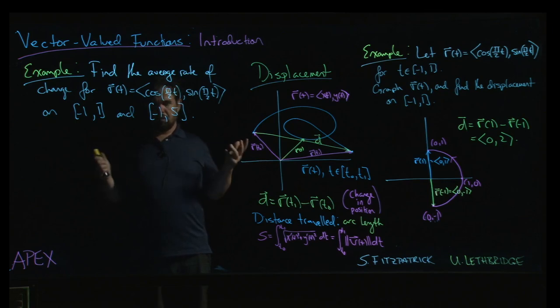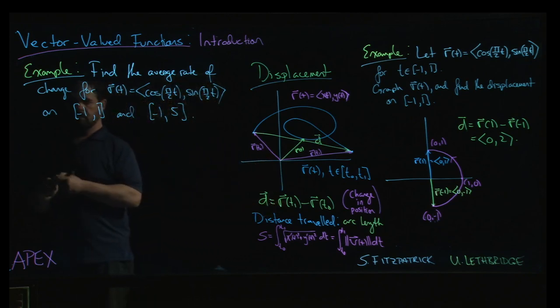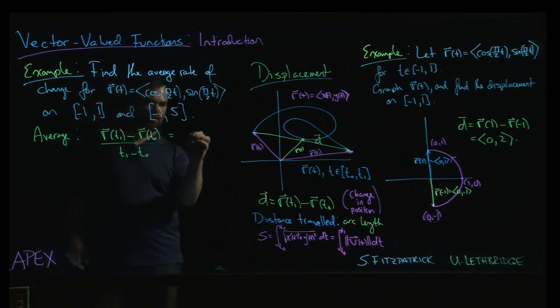You'll have essentially, if you think of this as position, an average velocity. The average rate of change is going to be r at the final point minus r at the initial point, over the length of the interval. So it's the displacement over the change in t.